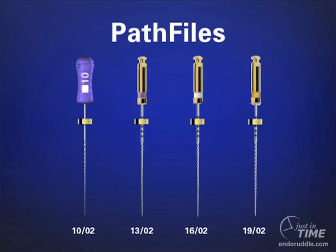The disclaimer is: we do not use three path files until we have catheterized any portion of the canal with a 10 file. The 10 file needs to precede the mechanical files. The 10 file must be worked in any region of the canal until it is loose, and when you have a loose 10, you can immediately go to a 13, 16, and 19 path files.